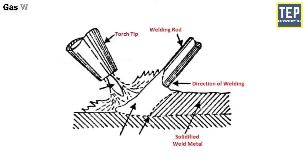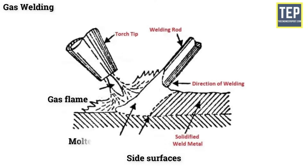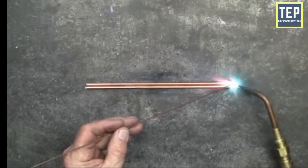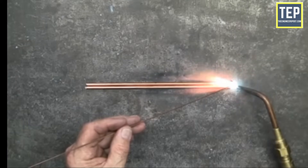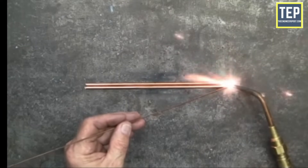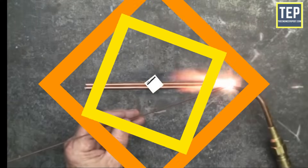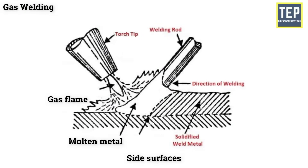Gas welding is performed by melting the sides or surfaces to be connected by a gas flame and allowing the molten metal to flow together, thus creating a solid continuous joint upon cooling. Oxygen-acetylene mixtures are used to a very great extent and hold a prominent position in the welding industry. The temperature of the oxy-acetylene flame in its hottest area is about 3,200 degrees Celsius, while the temperature reached in the oxy-hydrogen flame is about 1,900 degrees Celsius.